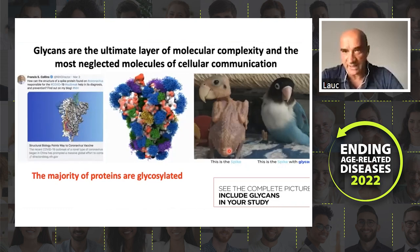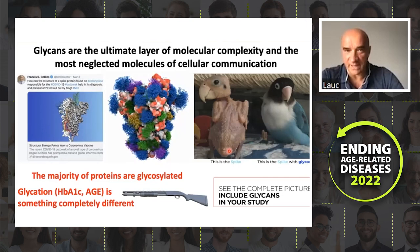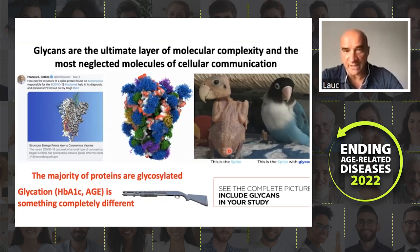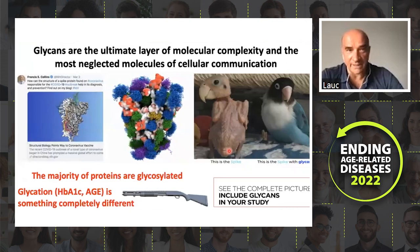A word of caution: glycosylation and glycation are something completely different. Glycation, which we usually measure as HbA1c or advanced glycation end-products, is a random chemical damage — like taking a shotgun and firing at a protein. While glycosylation is a sophisticated modification which occurs to the majority of proteins, and it enriches protein structure and function.